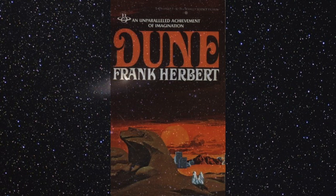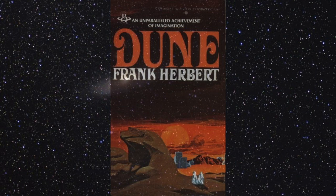The Bene Gesserit think they're doing the right thing, but really their actions are going to lead to disastrous consequences — which they do. All this breeding and the whole plan they had gets a monkey wrench thrown into it, and they end up paying the price, leading to a very bad thing as you see later in the other novels. Paul is already starting to see in this first chapter that he has a very dark future ahead that he wants to try to avoid. But we all know he doesn't.